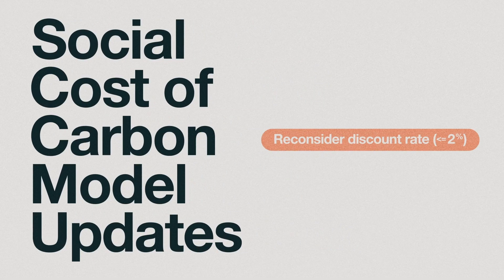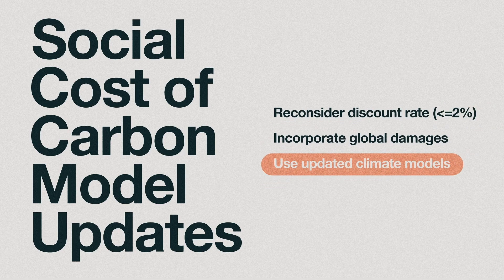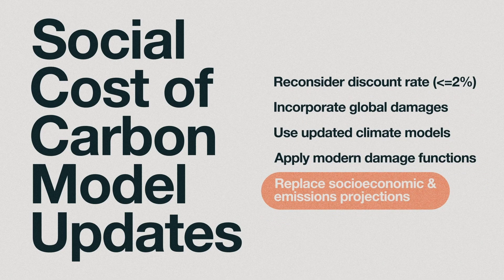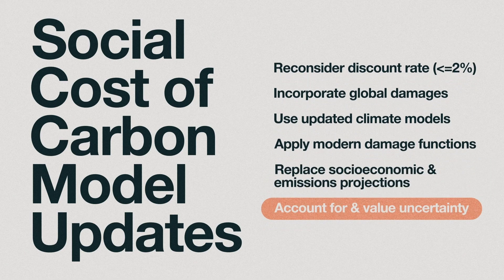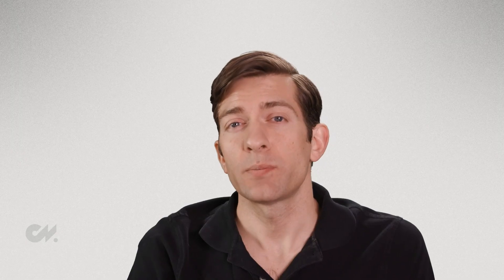Along with reconsidering the discount rate and incorporating global damages into the calculation, finding a better estimate for the social cost of carbon should include using the latest climate models, damage functions, and socioeconomic and emissions projections; accounting for and valuing uncertainty; and factoring in equity weighting. With these updates, the social cost of carbon would have the ability to influence climate policy and regulate industries across all sectors in a way that more effectively decarbonizes the United States economy.